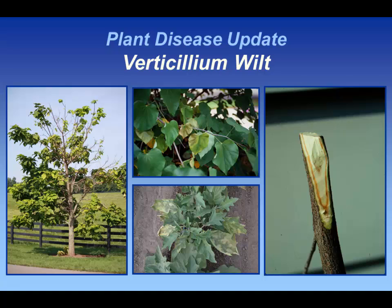With verticillium, you can see it in things like redbud, you can see it in maple trees. A variety of maples — about the only maple I don't see it in very commonly is silver maple. You can also see it in things like, if you're a vegetable grower, probably the best indicator plant, quite frankly, for this organism is eggplant.